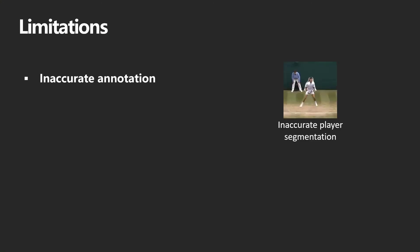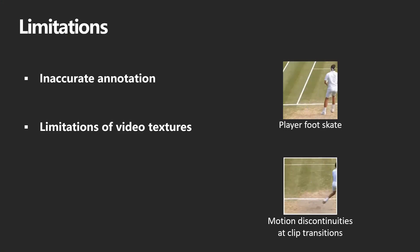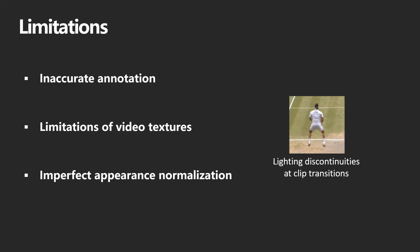Although our system generates visually realistic video sprites, visual artifacts still remain. Output can exhibit errors due to imperfect annotations, such as inaccurate player segmentation or inaccurate racket segmentation due to motion blur. However, increasingly accurate computer vision models stand to reduce these artifacts and make the majority of our annotation pipeline fully automatic. Results also display well-known video texture artifacts such as player ghosting and discontinuity at clip transitions, which occur when the clip database lacks good matches. We are interested in exploring neural rendering and neural motion synthesis techniques to address these issues, and lighting normalization may be improved by more advanced image harmonization techniques.